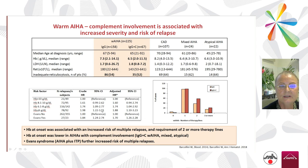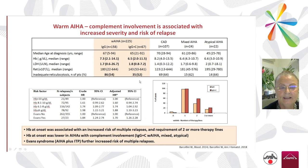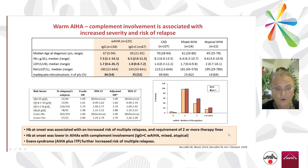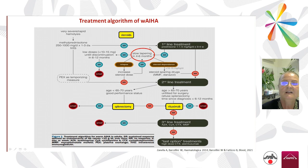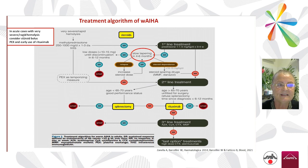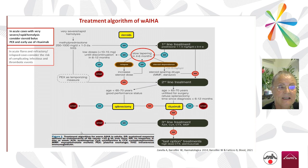In warm autoimmune hemolytic anemia with complement involvement, these cases are more severe: hemoglobin is lower, LDH is greater, and reticulocytosis may be inadequate. There is also a high risk of relapse and need for additional therapies beyond the first line, which is of course steroids.